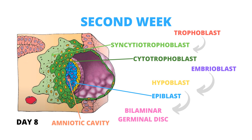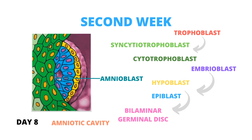On the other hand, the embryoblast differentiates into two layers: a layer of cuboid cells known as the hypoblast, and a layer of tall cylindrical cells called the epiblast. Both the hypoblast and epiblast constitute the bilaminar germinative disc. A small cavity appears in the epiblast, which increases in size and becomes the amniotic cavity. The epiblast cells adjacent to the cytotrophoblast are called amnioblasts, and together with the rest of the epiblast they line the amniotic cavity.